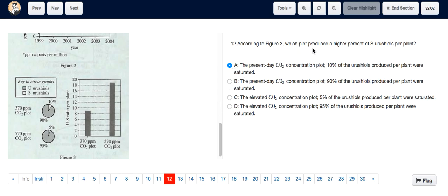So for question 12, there are two parts to the question. Firstly, we need to figure out which concentration plot produces a higher percentage of saturated urushiols. And then we need to determine what percent of the urushiols per plant was saturated.